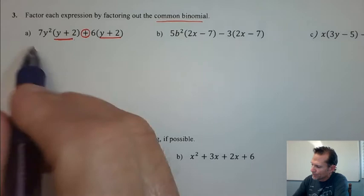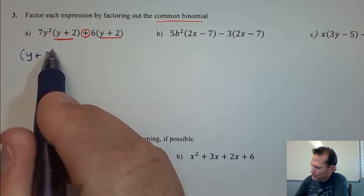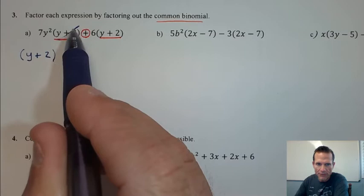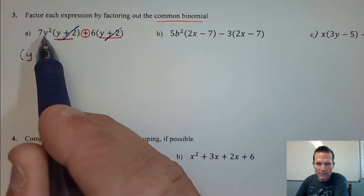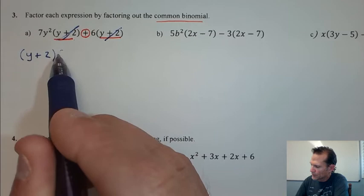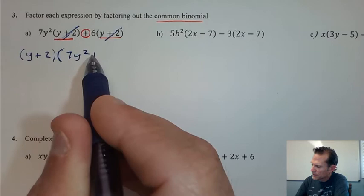So I'm thinking about pulling that y plus 2 out in front of this polynomial. I pull the y plus 2 out, and if you think about pulling the y plus 2 out, I could draw a line through it here and here. And what's left over?